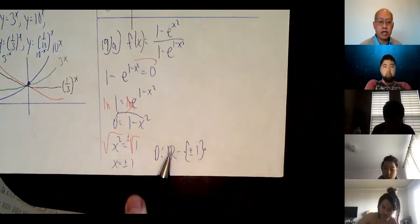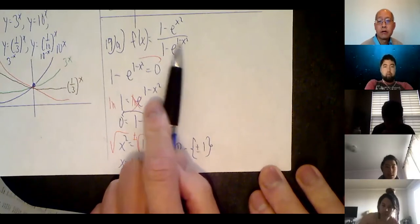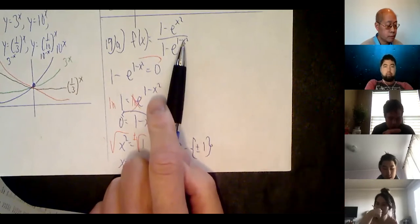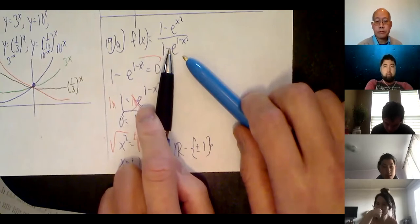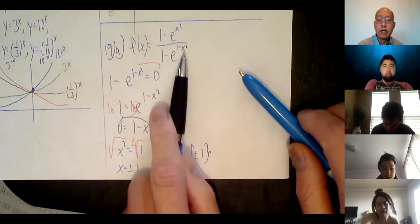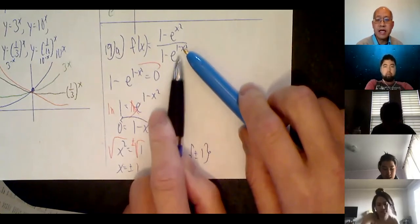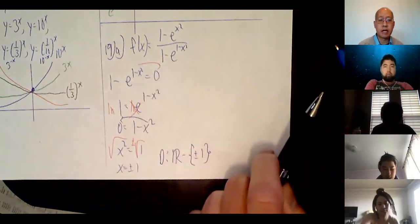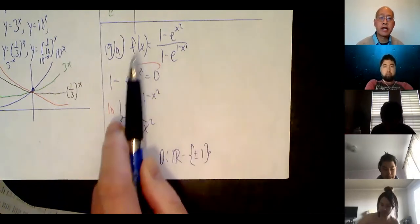So x equals plus or minus 1, which means for the domain, it's all real numbers minus the set consisting of plus or minus 1. That's the easiest way to write the domain. As a side note — notice what happens when you plug in 1: you have 1 minus 1 which is 0, e to the 0 is 1, and then 1 minus 1 is 0, so you end up with a 0 on the bottom. Likewise, if you plug in negative 1, negative 1 squared is also 1, 1 minus 1 is 0, e to the 0 is 1, and again 1 minus 1 is 0. So that's 19A — I'll let you do 19B on your own.